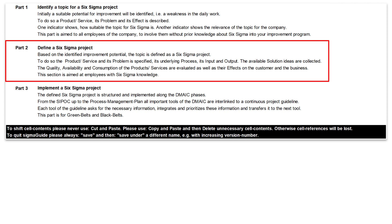In part 2, the project topic is further specified by describing the respective product or service, its problems and its underlying process. Furthermore, any solution ideas that may already be available can be entered. The quality, availability and consumption of the product or service is evaluated, as well as their effects on the customer and on the business. This part is aimed at employees with and without previous knowledge in SIGMAGUIDE. The result, the project definition, can serve as a basis for the management to select appropriate SIGMAGUIDE projects and to assign a sponsor for each project.